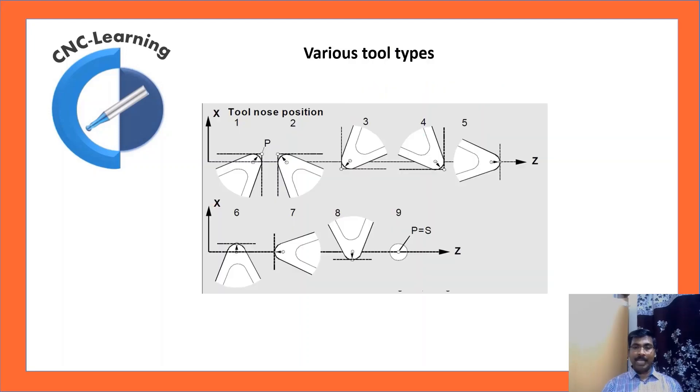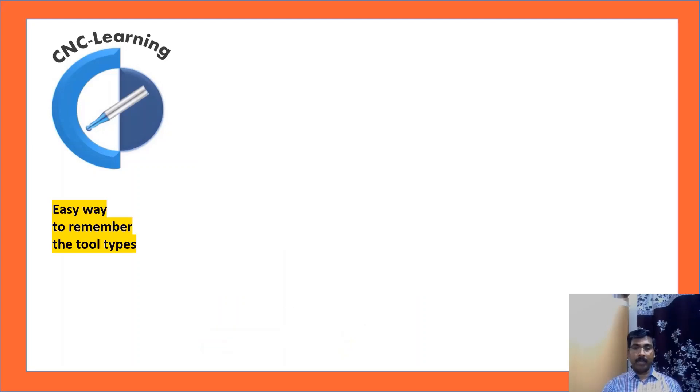Let us examine various tool types. There are nine tool types. You can see in the figure 1, 2, 3, 4, 5, 6, 7, 8, 9. As a thumb rule, OD turning tool will be 3 and ID turning tool will be 2. This will be true in most of the cases, but you need to see in detail.